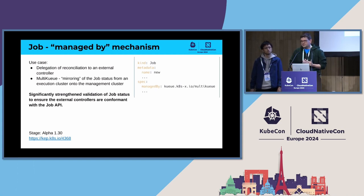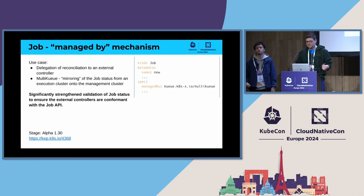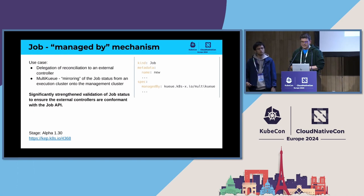The next feature is the managed-by mechanism, which is still in alpha. The goal is to give control over the job object to external controllers, which is needed for multi-queue. Because we are opening the Job API to external controllers, we need to ensure that changes made to job status are sensible and expected by API clients. So we significantly strengthened validation of job status.